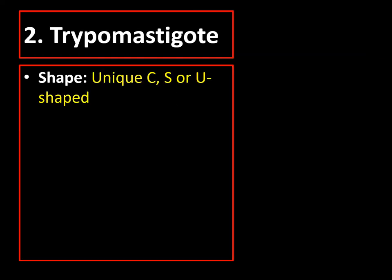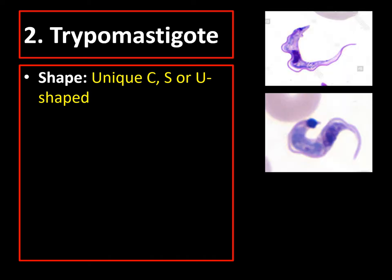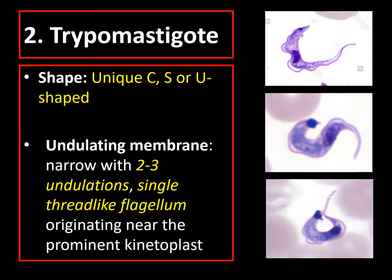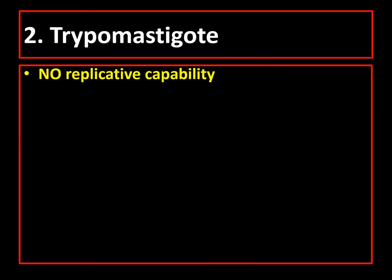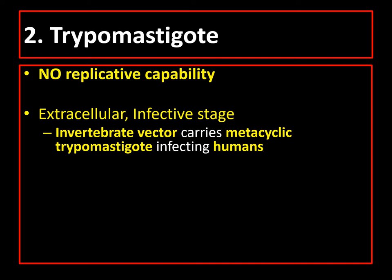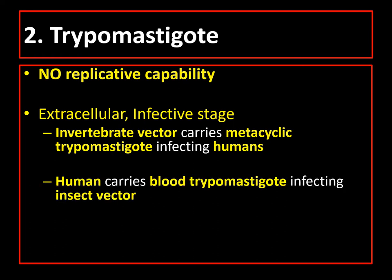Trypomastigote of Trypanosoma cruzi has a unique C, S, or U shape, with an undulating membrane that is narrow with two to three undulations. Trypomastigote is motile but doesn't have replicative capability. It is the infective stage to both the vector and the human host. The vector carries metacyclic trypomastigote, which is the infective stage to humans, while the human host carries blood trypomastigote, which is the infective stage to the vector.